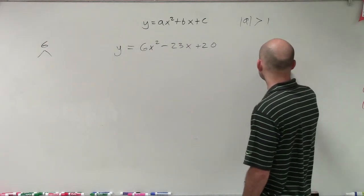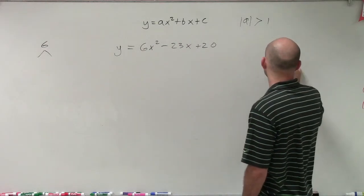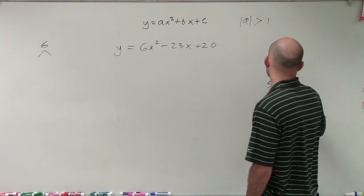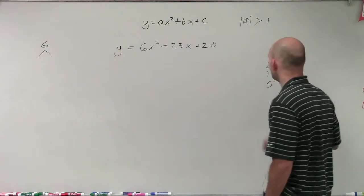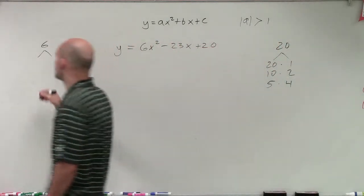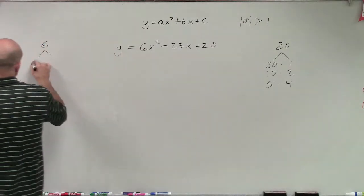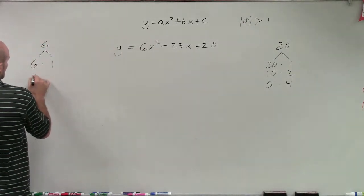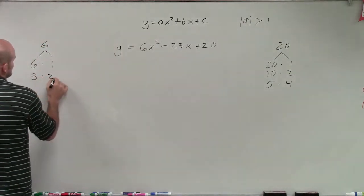So for 20, I have 20 times 1, 10 times 2, or 5 times 4. And for 6, I have 6 times 1, or 3 times 2.